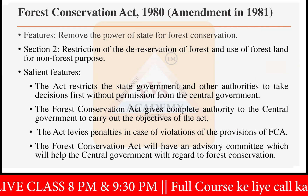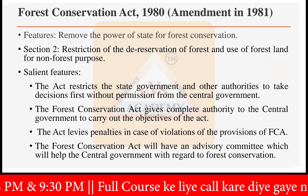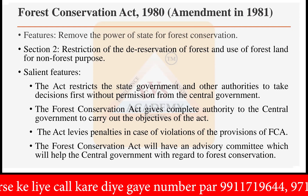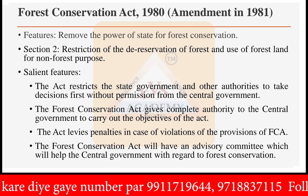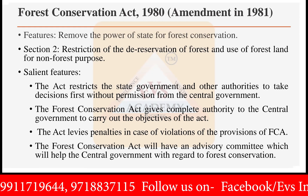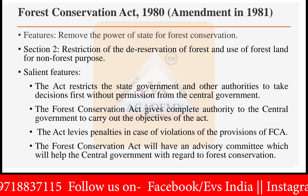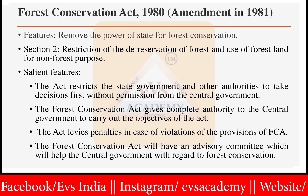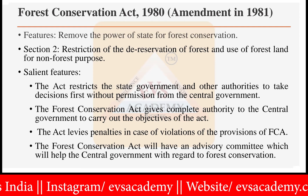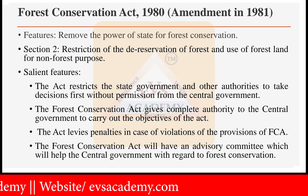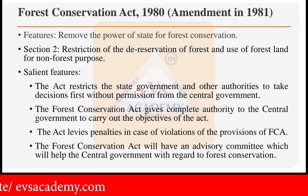Under the Forest Conservation Act 1980, the main provision is Section 2, which is the restriction of the deregulation of the forest and use of forest land for non-forest purposes. It means you cannot use the forest land for any other kind of purpose — for example, agriculture or the establishment of any industry or township. That is not allowed. Forests are strictly conserved under this Act after 1980.